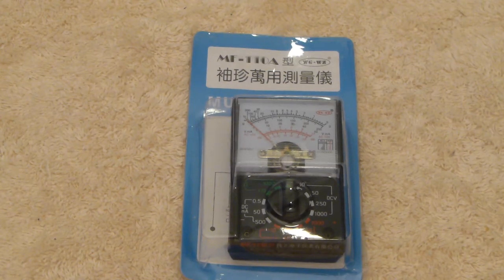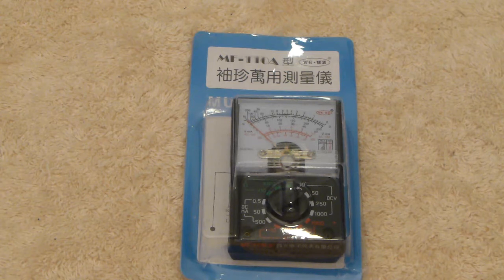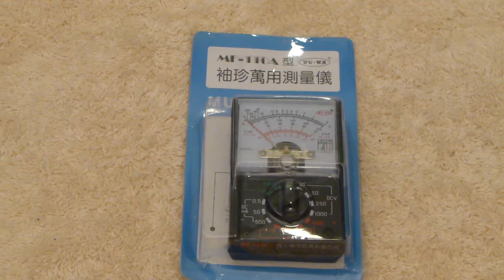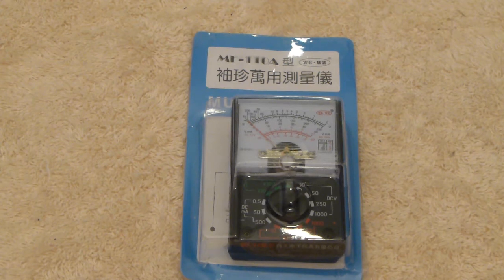This is a look at a cheap multimeter from eBay, which cost about Australian $4.20 or about US $3.20 or so. I just thought I'd have a look at it and see what you get for that amount of money.